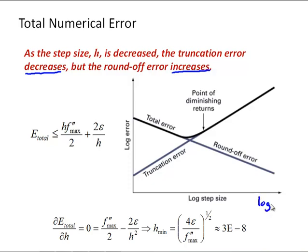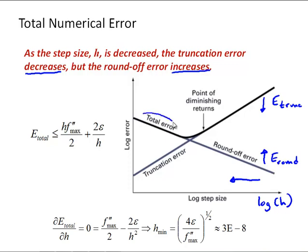Here's the graph that illustrates this behavior. We have log of h on the x-axis. As h goes down, we see the round-off error is increasing and the truncation error — this upper line — is decreasing. That is E_t and this is E_round. Eventually we get to a point where the round-off error actually dominates the total error. As we keep reducing h to try to reduce truncation error, we hit a point of diminishing returns and the total numerical error is driven by the round-off error, which is unpredictable.